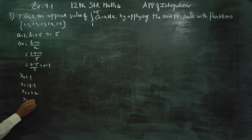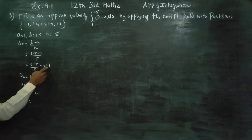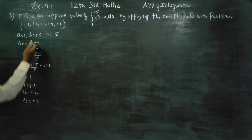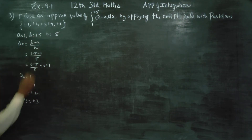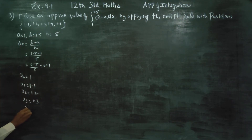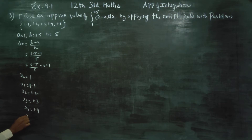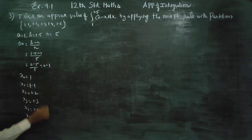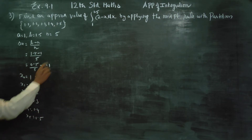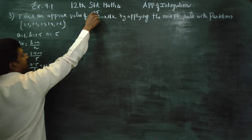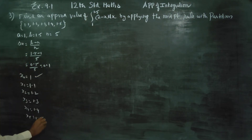X3 is 1.3, X4 is 1.4, and X5 is equal to 1.5. We will start with 1 and end at 1.5.